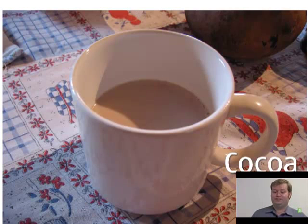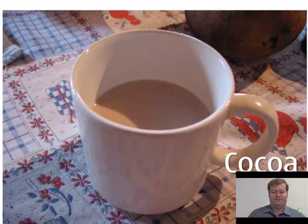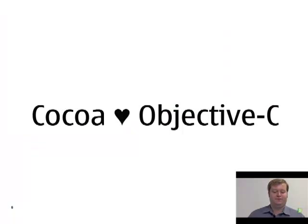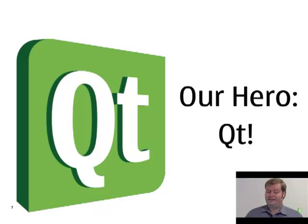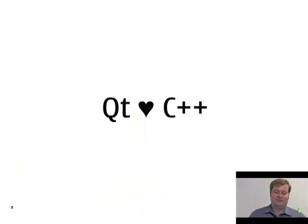The next library is called Cocoa. Cocoa comes from the NeXT step world, and Cocoa loves Objective-C. Objective-C is an object-oriented extension to the C programming language. And finally, we have our hero: Qt. Qt loves C++.